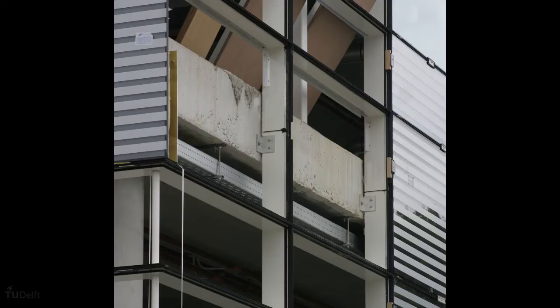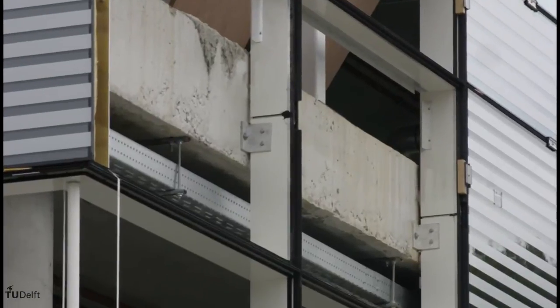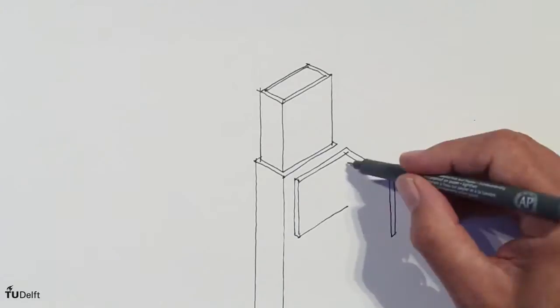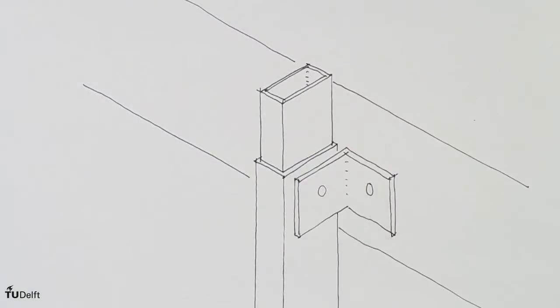The posts in curtain walls, that often run over the whole height of the facade, have to be interrupted every other story to allow thermal expansion. The top post slides over an aluminum profile that just fits in the top of the lower post. The posts are hanging downwards. This connection allows vertical movement, but prevents any horizontal displacement of the post.